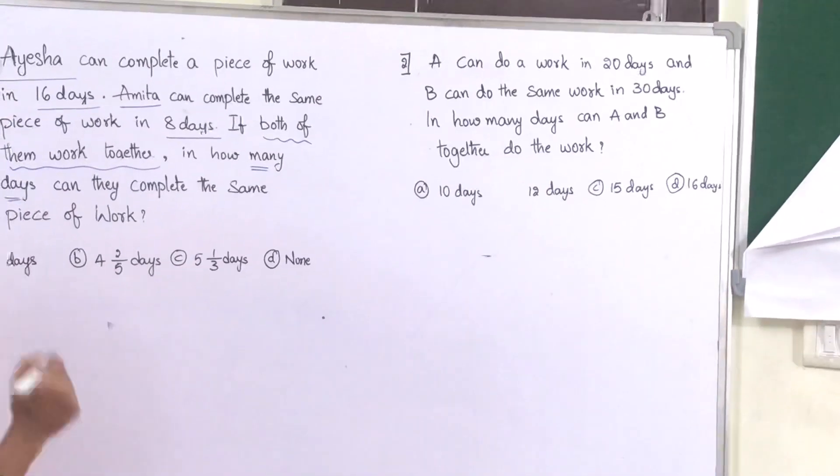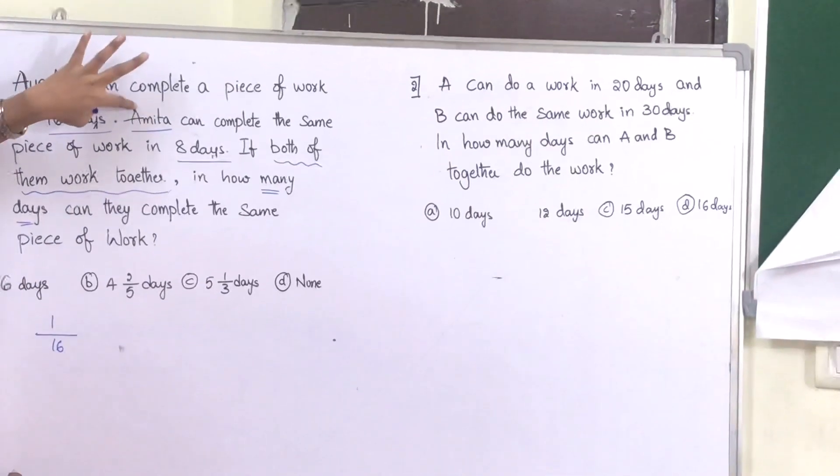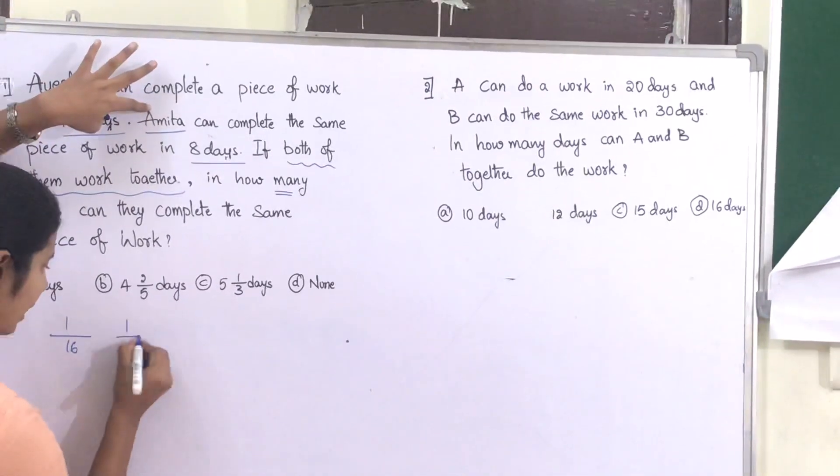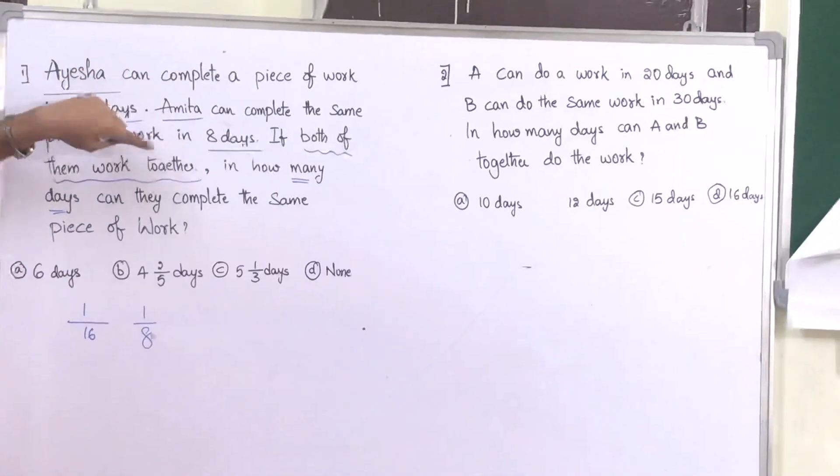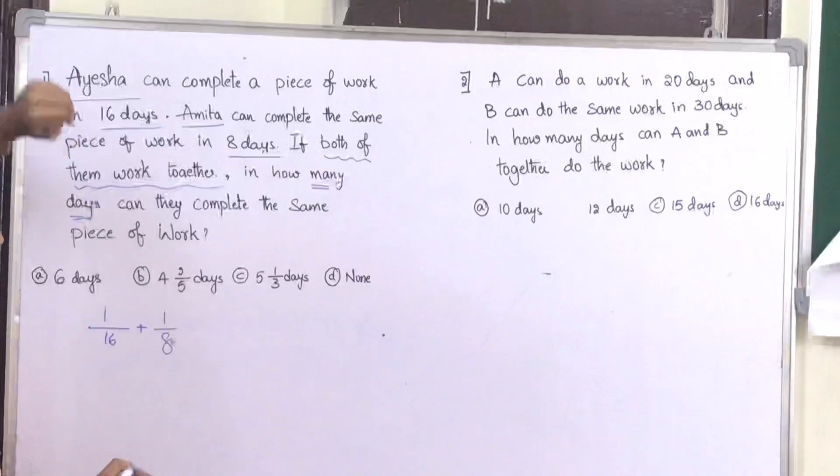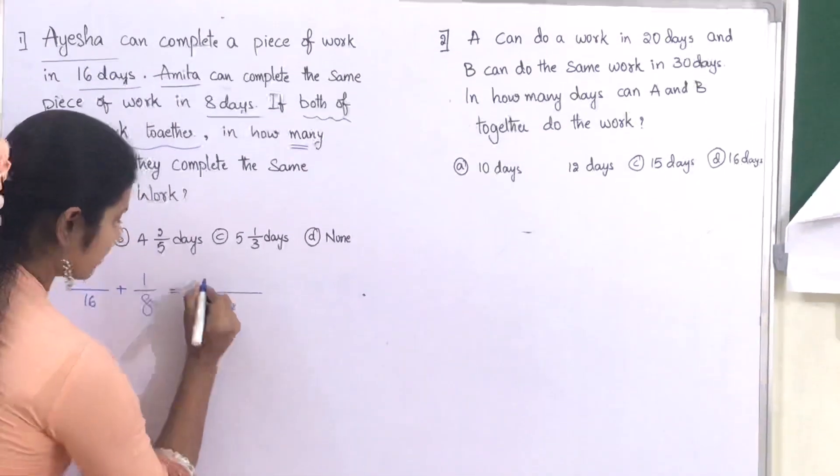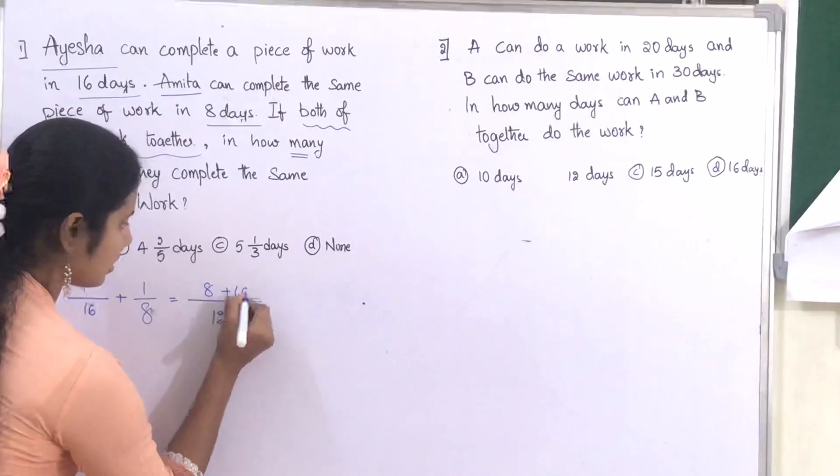Aisha's work done for one day is 1 by 16 and Amita's work done for one day is 1 by 8. As they were asking work together, they have to add both works.